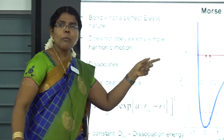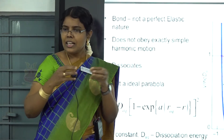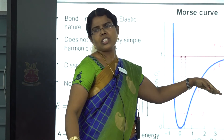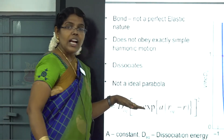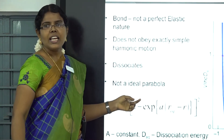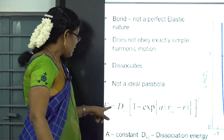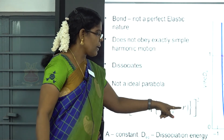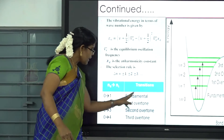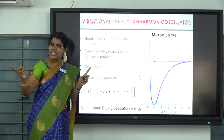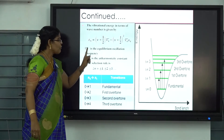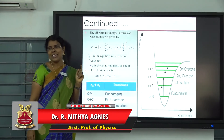For an anharmonic oscillator, the motion is not harmonic so the potential energy curve is asymmetric. The potential energy is given by the Morse function: V = Dₑ(1 − e^(−ar))², rather than V = ½kx². By substituting this potential into the Schrödinger wave equation and solving using the perturbation method, we obtain the vibrational energy of the anharmonic oscillator.